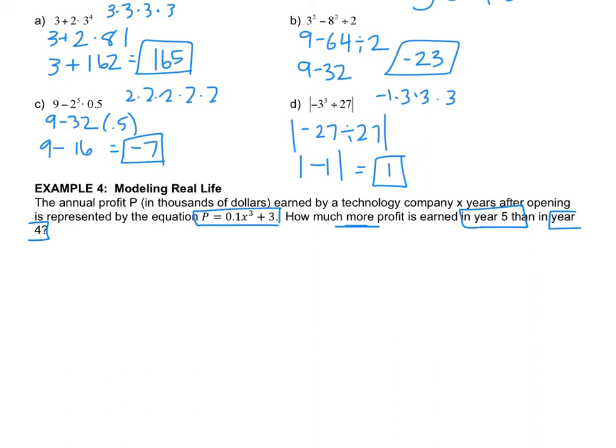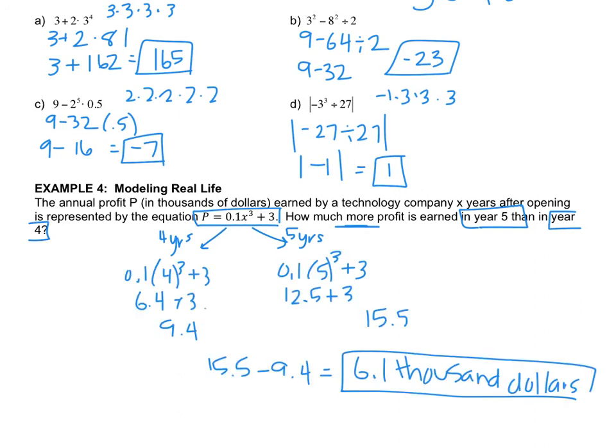You're going to find the value at 5 years, and it wants to know how much more profit was earned. So you're then going to subtract, and when you're ready, press play. So the answer is $6,100, which we, in regular person speak, would be $6,100. But I left it as 6.1 because that's what the numbers gave me. If you have any questions, write them down, and ask me when you come to class.